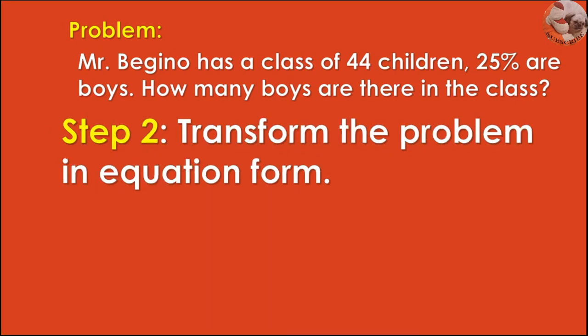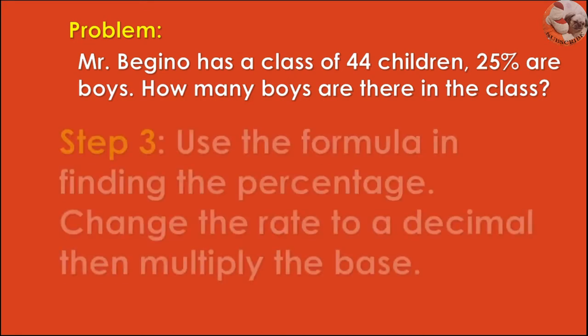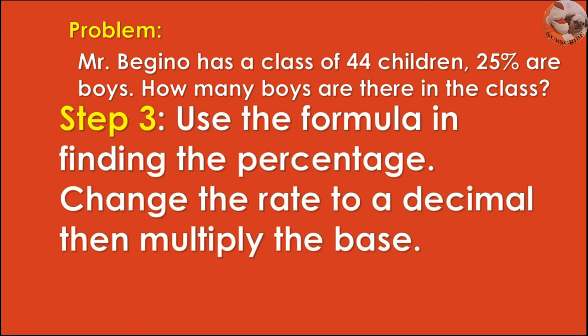Step 2: Transform the problem in equation form. So 44 times 25% is equal to N. Step 3: Use the formula in finding the percentage — change the rate to a decimal, then multiply the base.